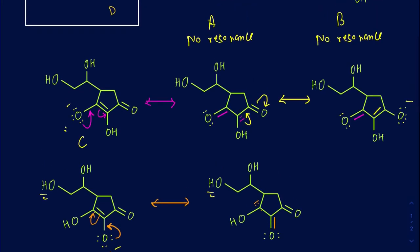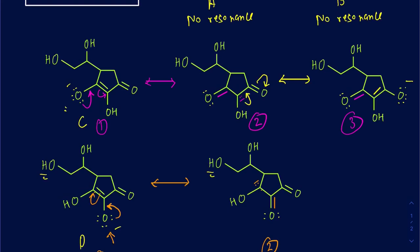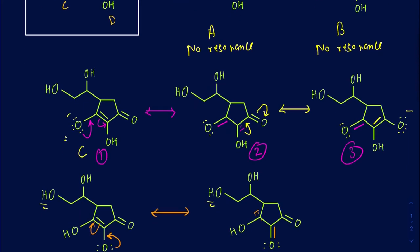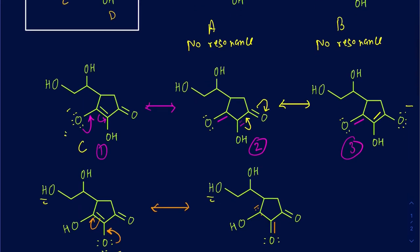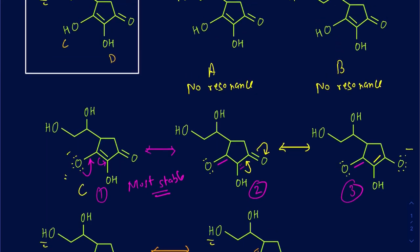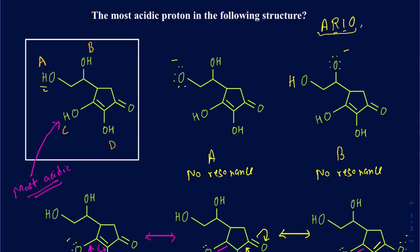When I look at conjugate base C, there are clearly three resonance structures, as opposed to only two resonance structures for conjugate base D. Conjugate bases A and B don't even have any resonance structures, so they are going to be the least stable. Out of all of them, conjugate base C is going to be the most stable because of multiple resonance structures. Since it's going to be the most stable, the proton of that conjugate base — the acid — is going to be the most acidic. So at the end of the day, proton C is the most acidic proton. If you have any questions, feel free to leave comments in the section below.